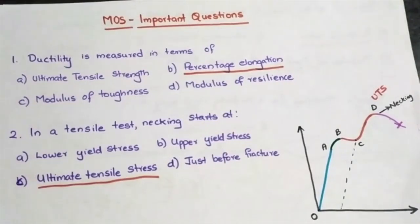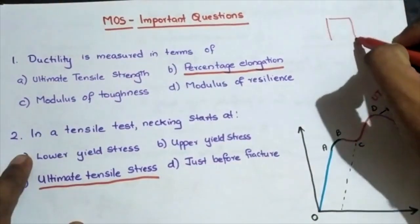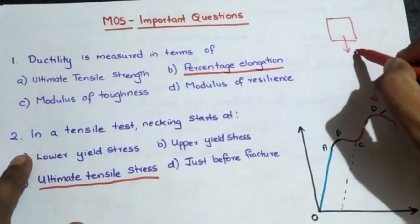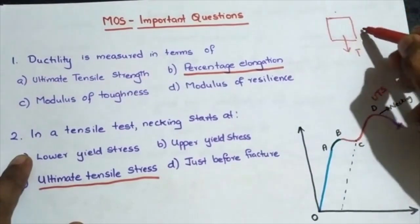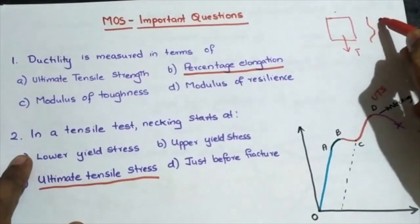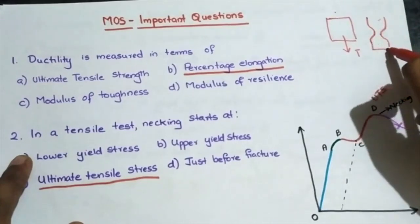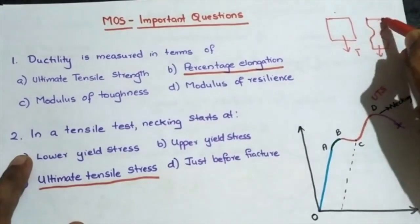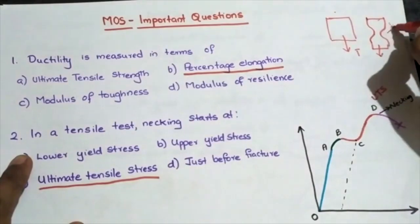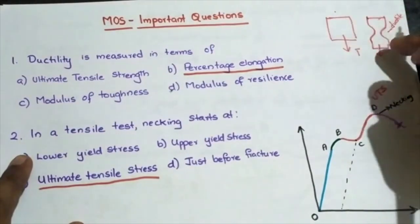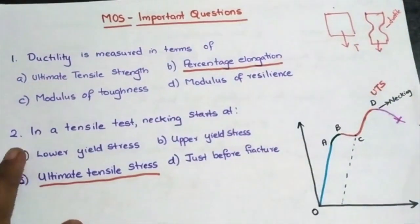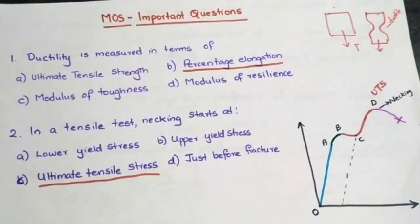First question: ductility is measured in terms of — ultimate tensile strength, percentage elongation, modulus of toughness, or modulus of resilience? The answer is percentage elongation. If a material is subjected to a tensile force, the amount at which it reduces its area and the amount it elongates defines its ductility. A material is said to be ductile if it shows these characteristics, so ductility is based on percentage elongation as well as percentage reduction in area.